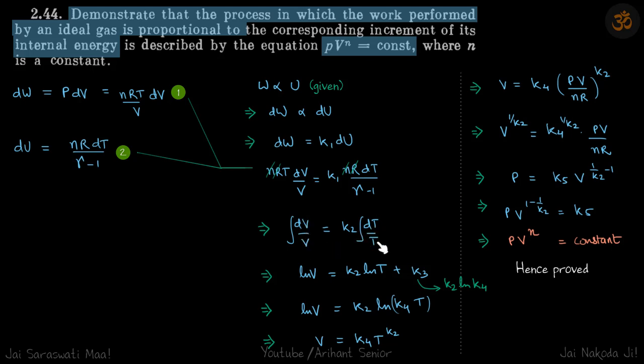So solving this integral, but we don't know the limits, so we'll just introduce another constant here. So ln V equals K2 ln T plus K3. Now K3 we can write as, let's say, K2 ln K4, where these are some random constants.